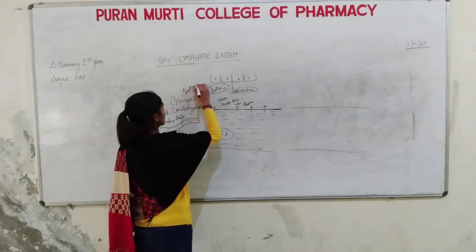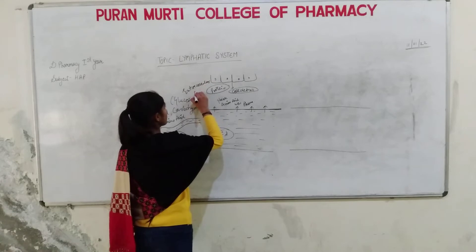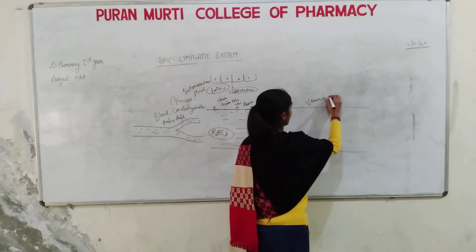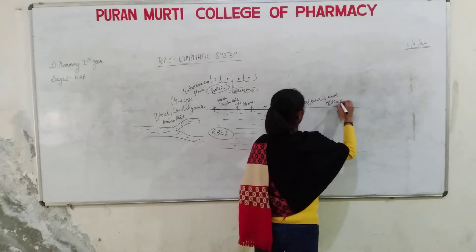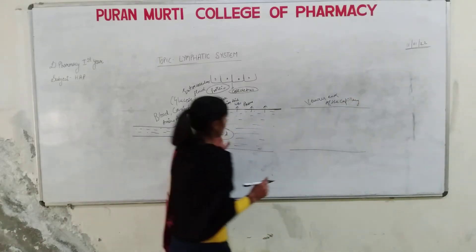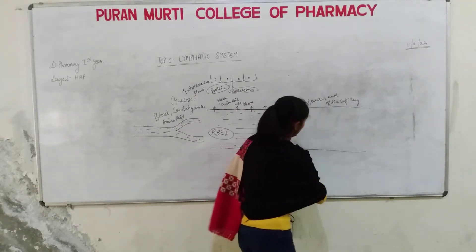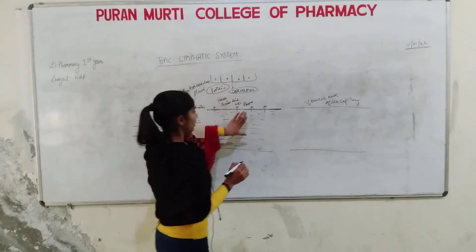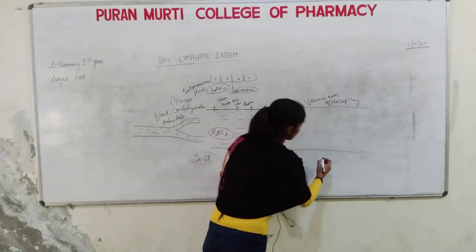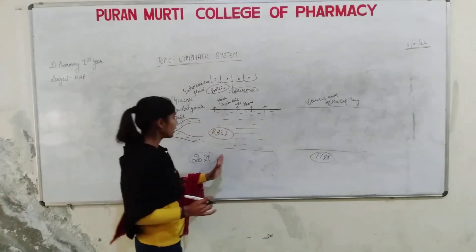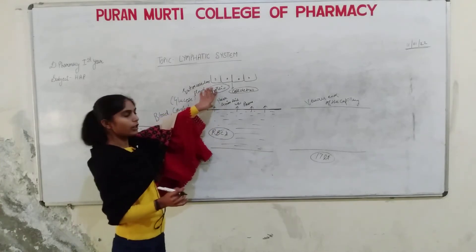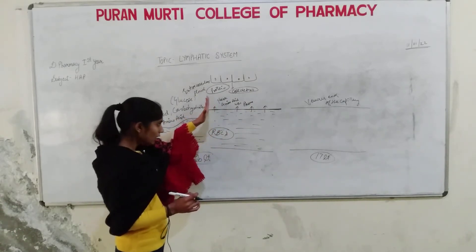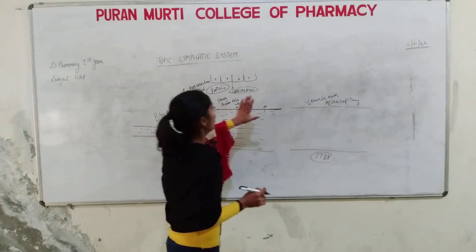All of these substances then move toward the venous end of the capillary. At the arterial end, about 20 liters of fluid is released. At the venous end, 17 liters of fluid is reabsorbed. So 3 liters of fluid remains as extracellular fluid. If this 3-liter fluid were lost every time, our body's electrolytes would be disrupted — so this fluid loss must be prevented.